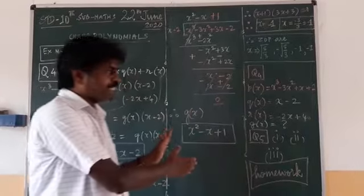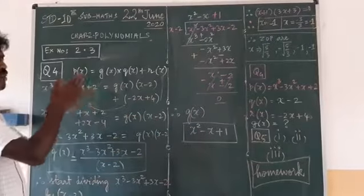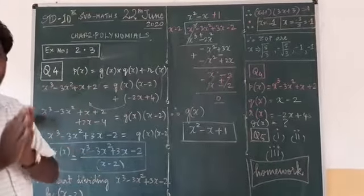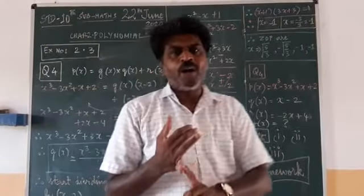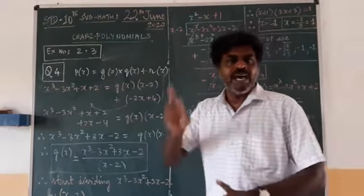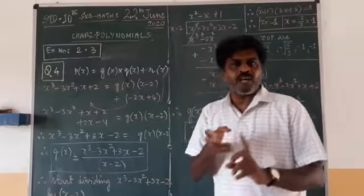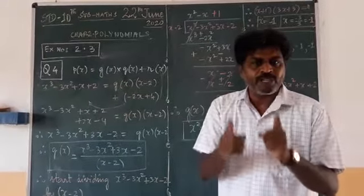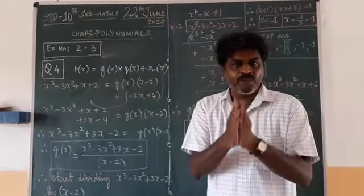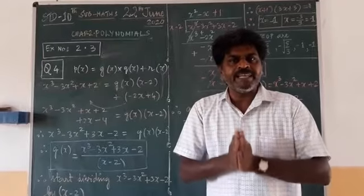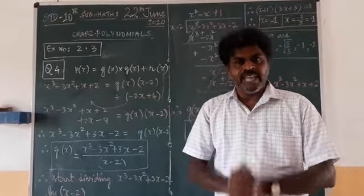So till that, we have completed our polynomial chapter also. What you have to do? Polynomial chapter, all the example problems, and the first chapter property we have finished, all the example problems. You have to write it in a separate assignment. You have to do as you had to take in 9th standard. End.